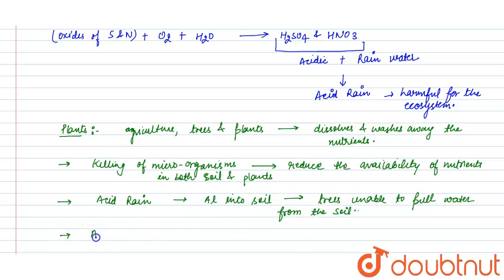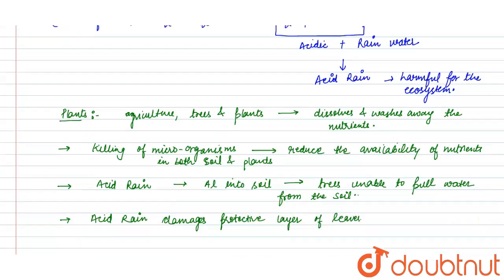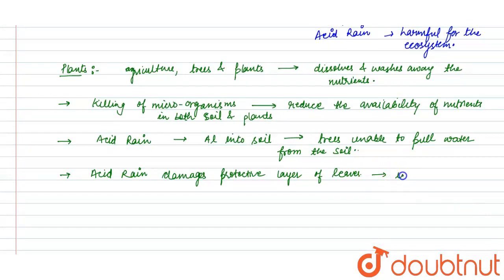Acid rain also damages the protective layer of leaves and interferes with the process of evaporation, thereby plants cannot breathe properly.